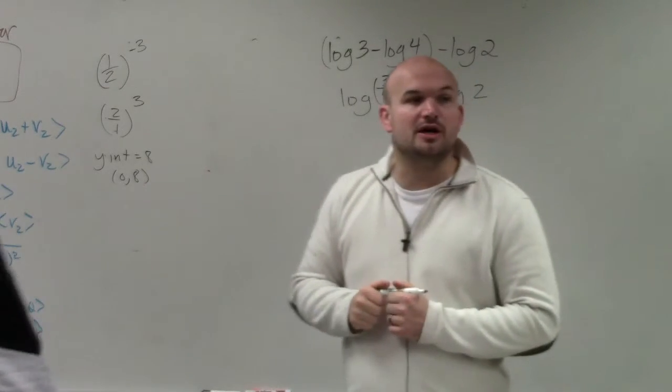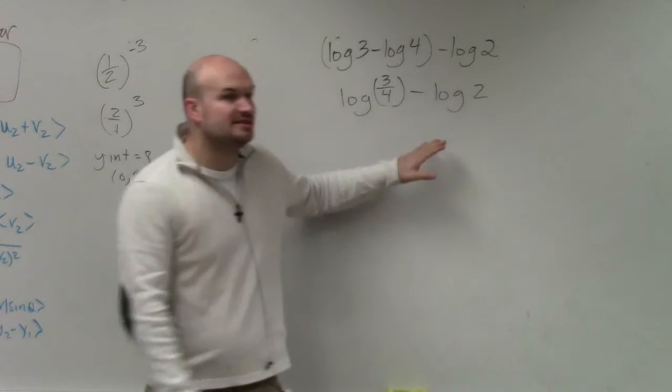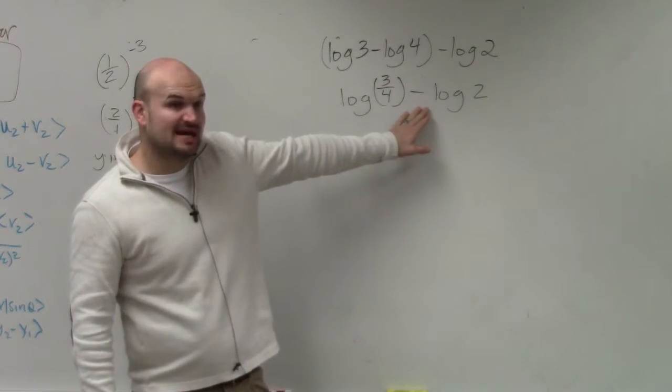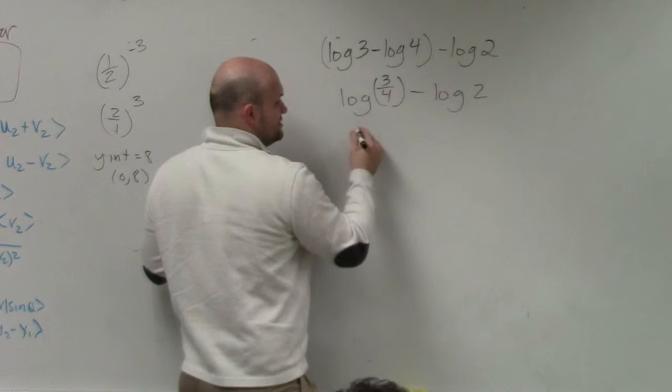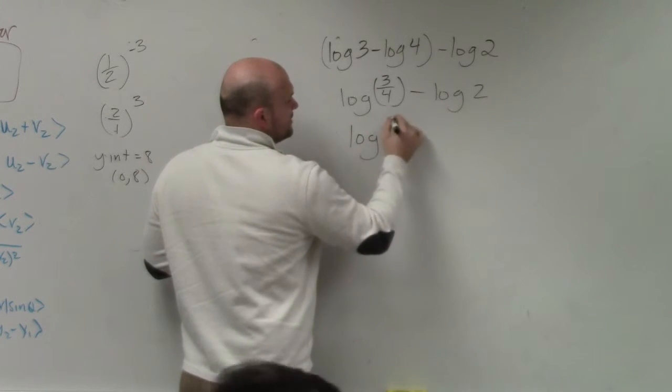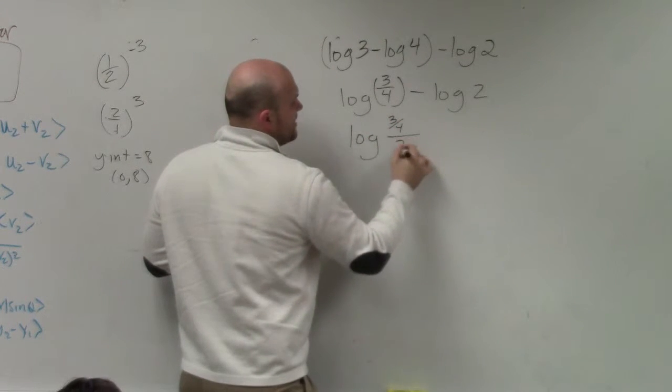Now we have another logarithm. So now we're doing the difference of two logarithms again. So now I need to use the quotient of 3 fourths and 2. So I have log of 3 fourths divided by 2.